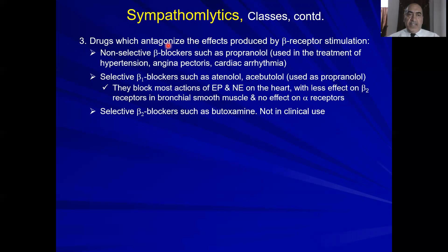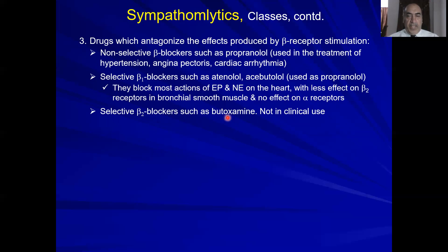The last class is the beta blockers. There are non-selective beta blockers such as propranolol, used in the treatment of hypertension, angina pectoris, and cardiac arrhythmia. Selective beta-1 blockers such as atenolol, acebutolol, metoprolol, and bisoprolol are used similarly to propranolol but are more selective — they affect beta-1 receptors in the heart without affecting beta-2 receptors in the lungs, which is advantageous specifically for asthmatic patients. Selective beta-2 blockers such as butoxamine are not in clinical use.